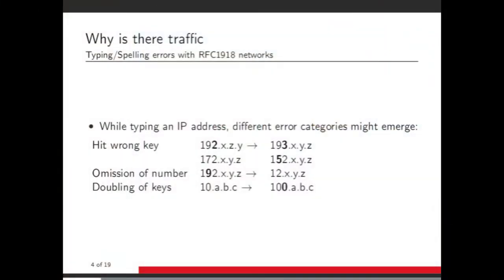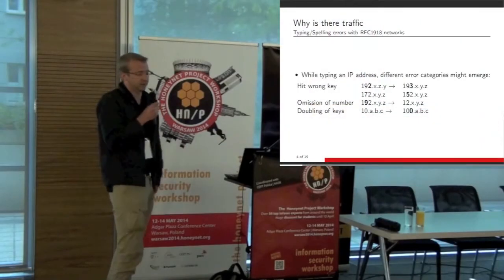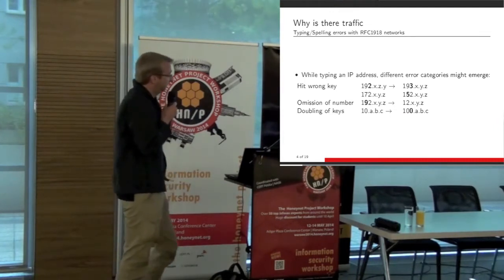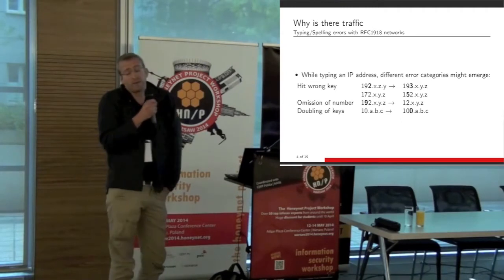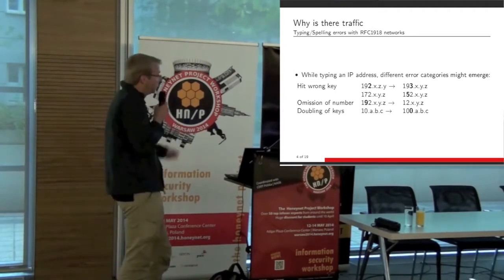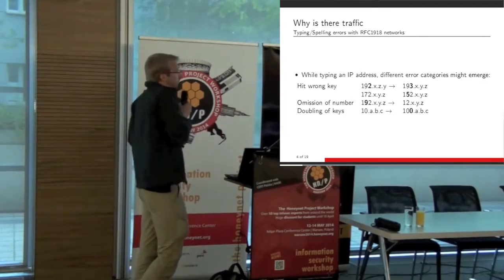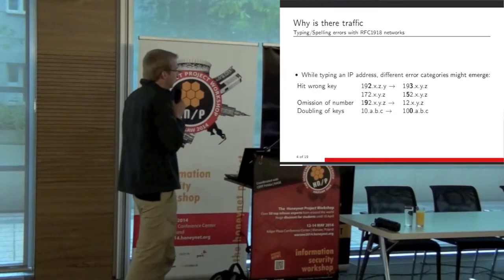Why is the traffic coming in? It's very straightforward. Everyone is typing IP addresses — sometimes ICT users, sometimes end users. People hit the wrong key and mistype an IP address. If you start typing 192 and then mistype and type 193, it could happen with other IP addresses too. For example, you miss one number and end up in another network. Sometimes you add an additional digit because you press a key too long. It happens.